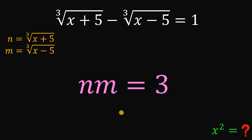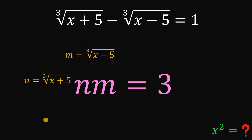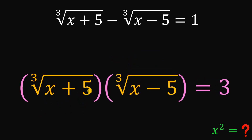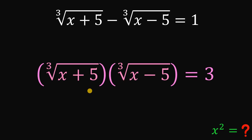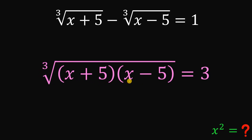Now let's focus on the result nm equals 3. We know n is cube root of (x plus 5) and m is cube root of (x minus 5), so we can substitute directly. Cube root of (x plus 5) multiplied by cube root of (x minus 5) equals cube root of (x plus 5)(x minus 5). This is a difference of squares, giving us cube root of (x squared minus 25).